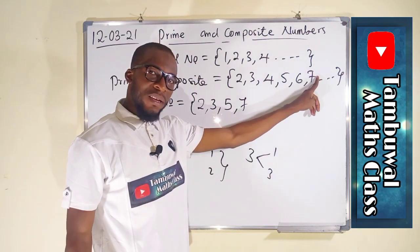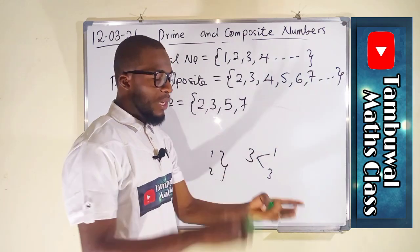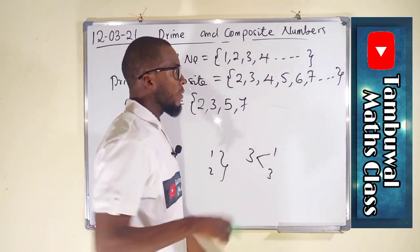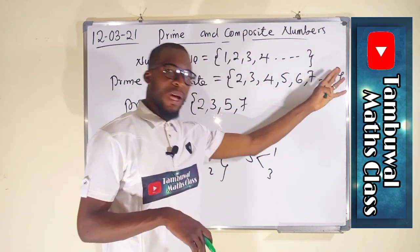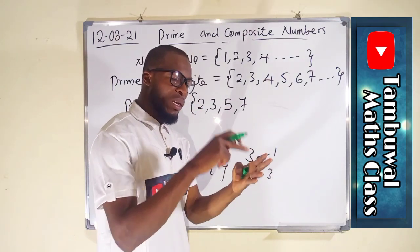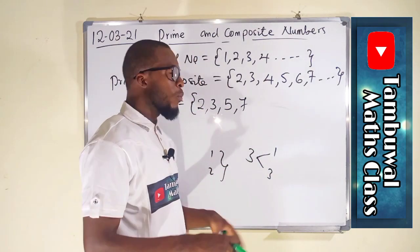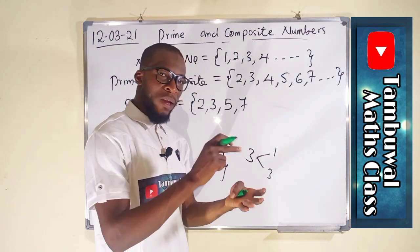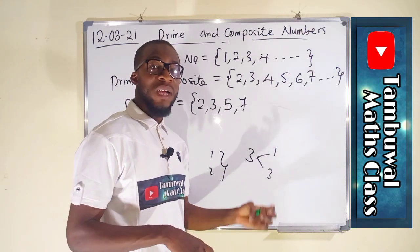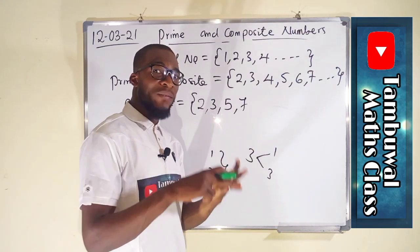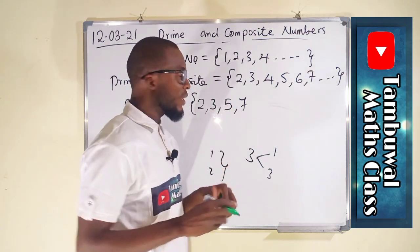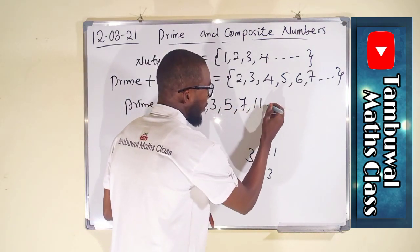Moving on, we have eight. It is not a prime because it has one, two, four, and eight. Moving on, we have nine. Nine is not a prime because nine has one, three, and nine. Moving on, we have ten. Ten has one, two, five, and ten. Moving on, we have eleven. Eleven has only two factors: one and eleven. These are the only two numbers that can go into eleven without remainder, so eleven is considered a prime.